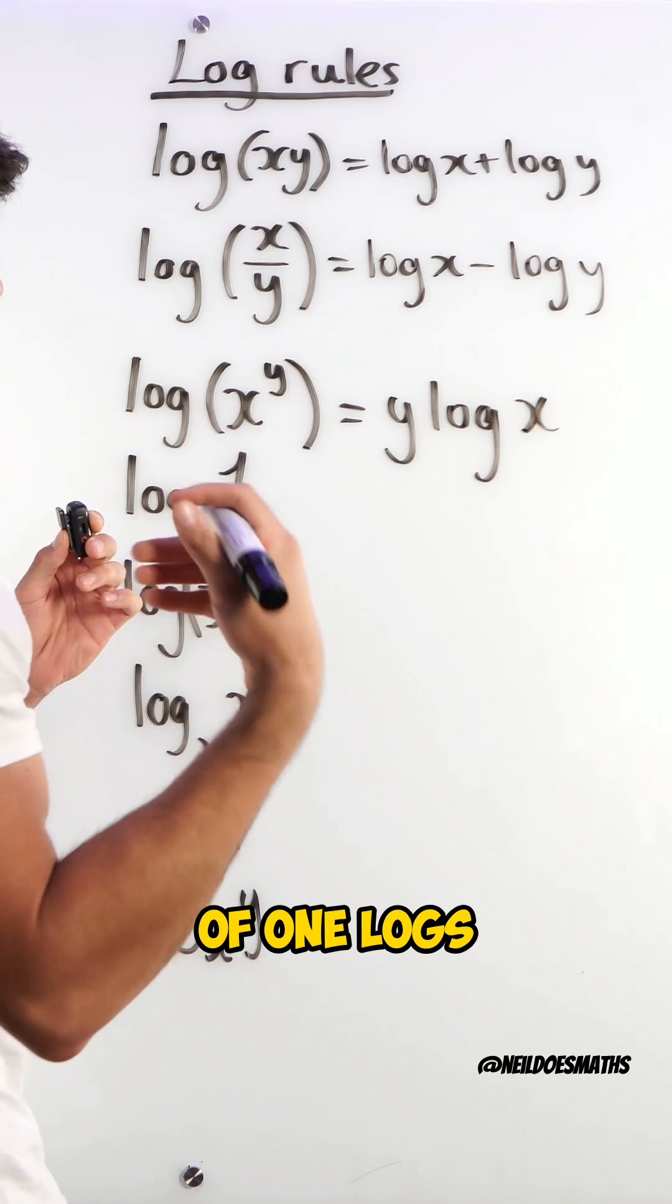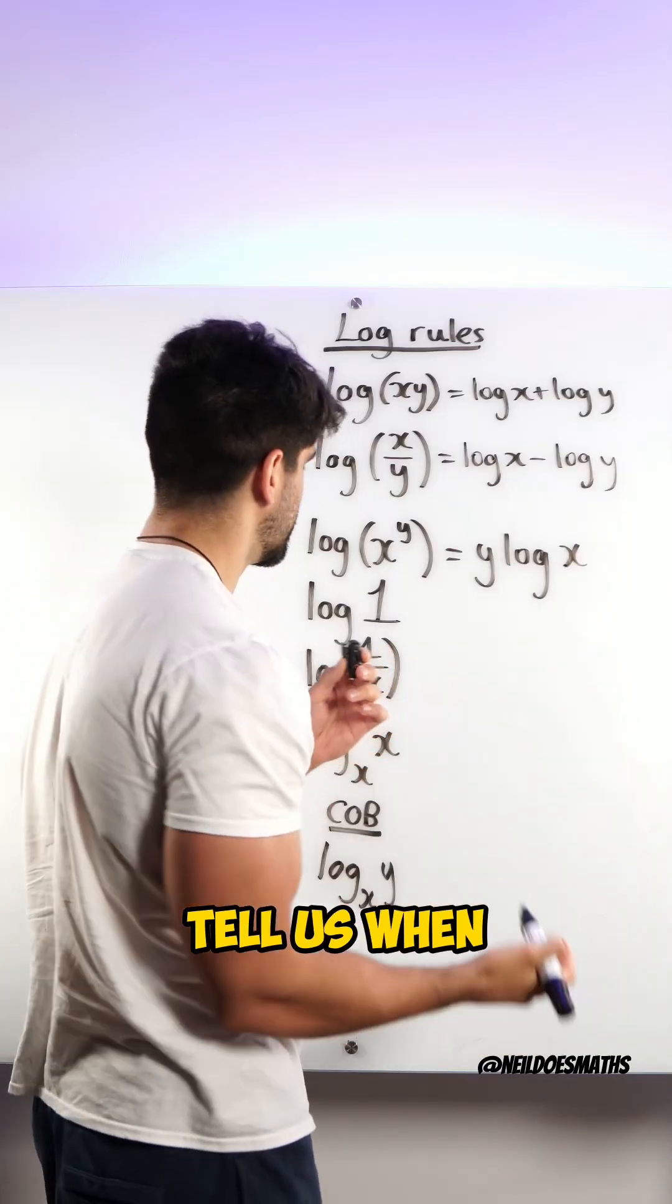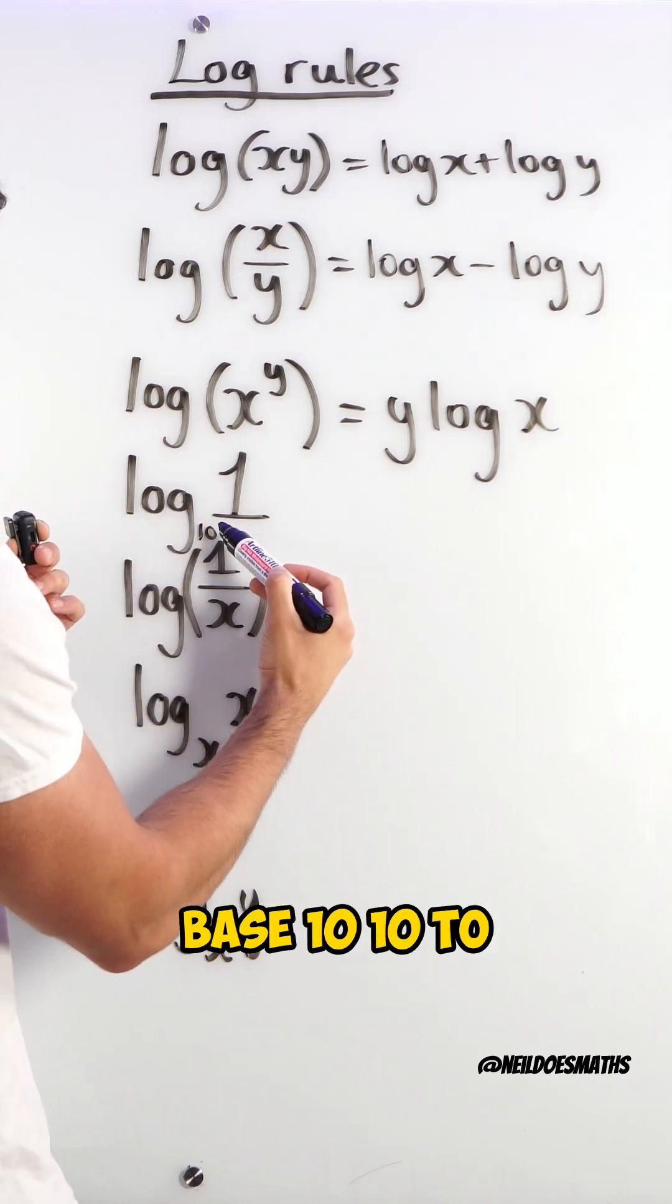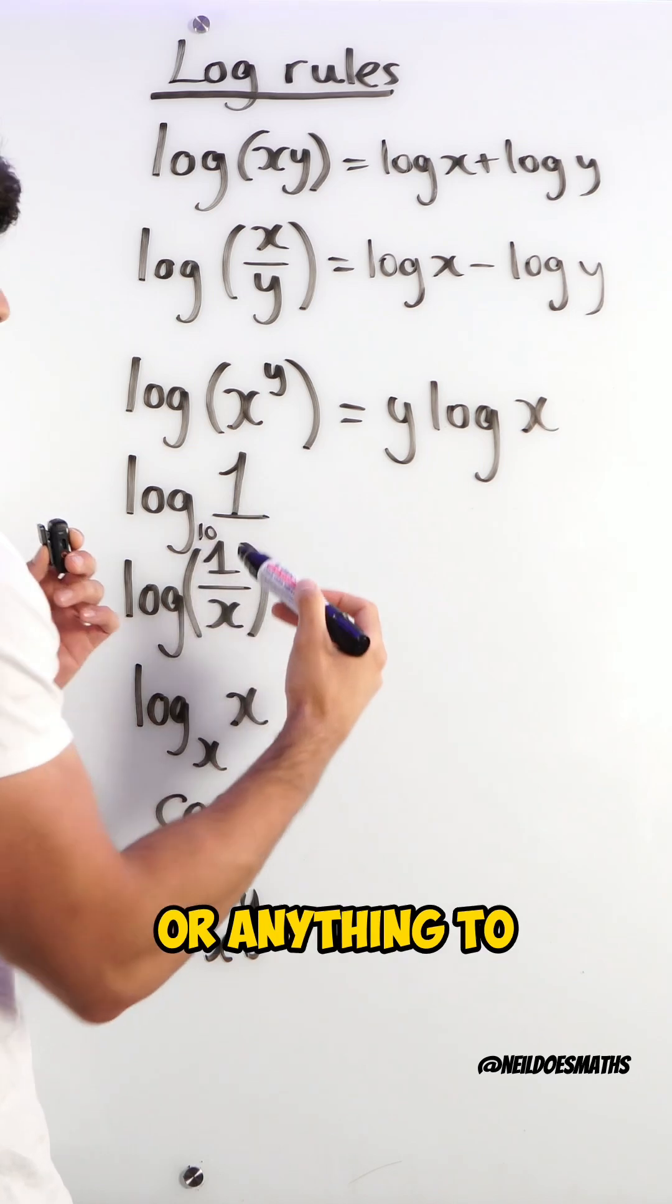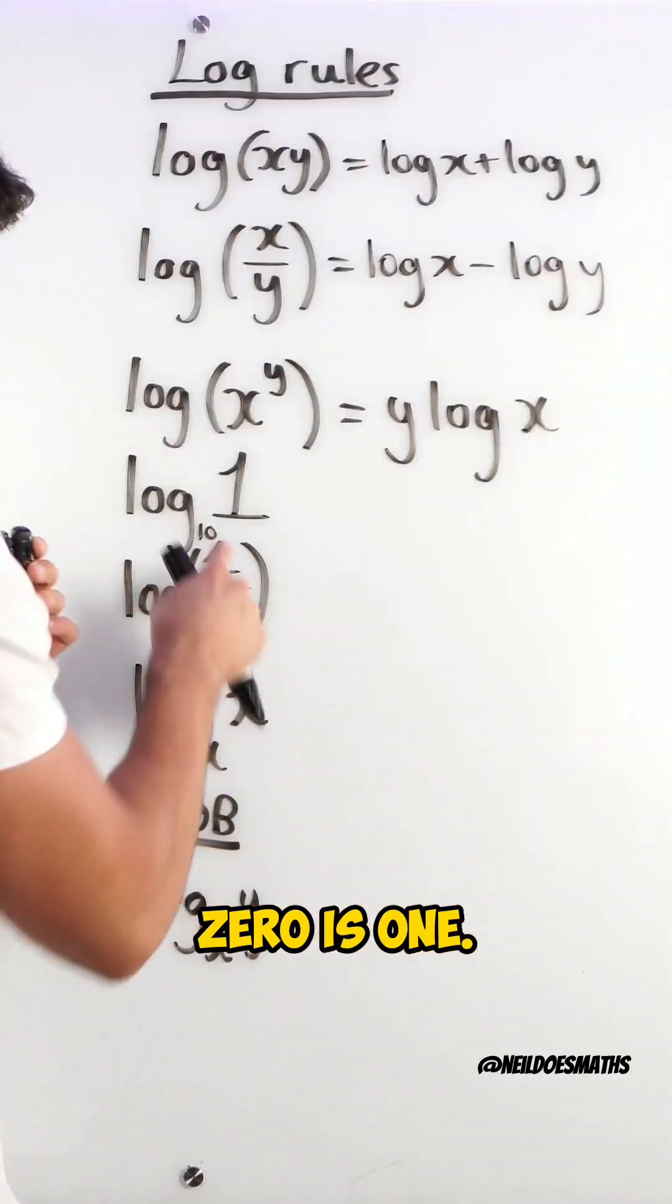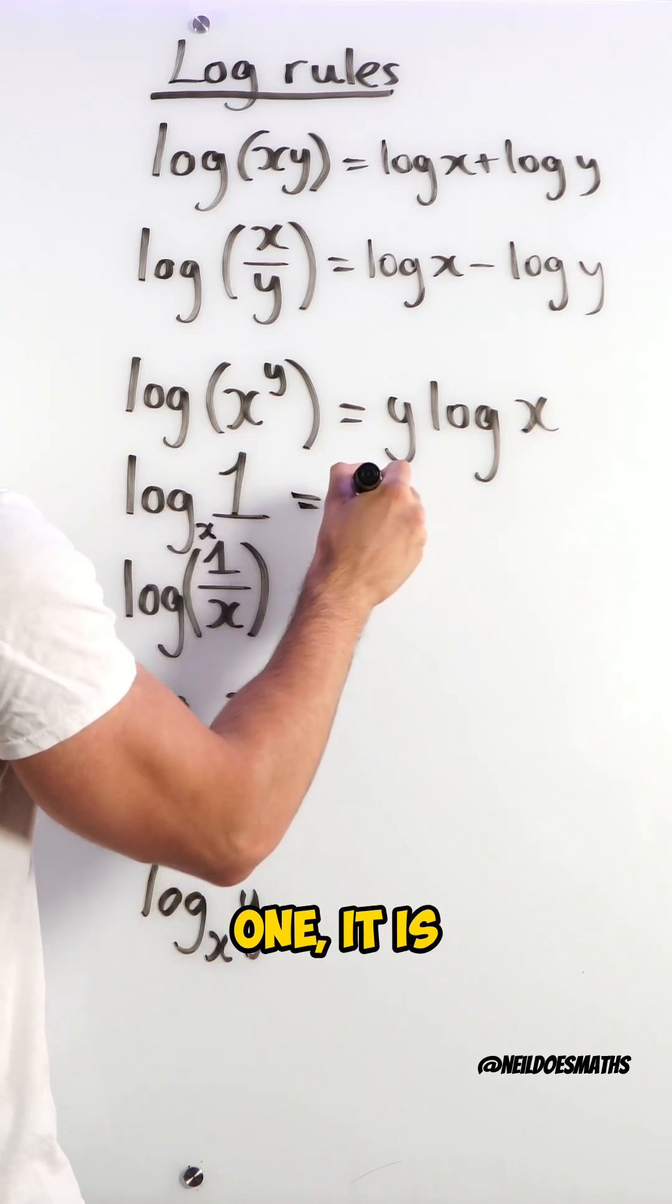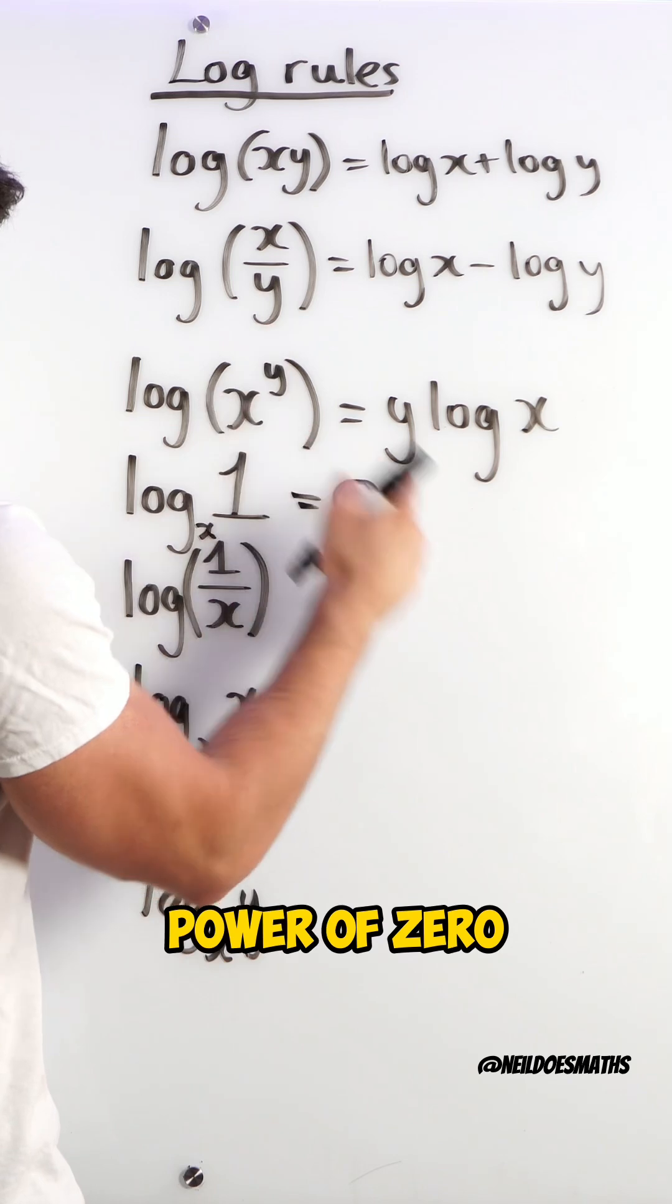Next one, log of 1. Logs tell us when you take a power, log means base 10, 10 to the power of what is 1? Or anything to the power of 0 is 1. So if I change this generally and say log base x of 1, it is always 0. Anything to the power of 0 is 1.